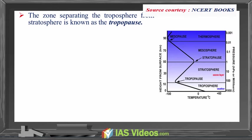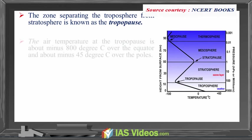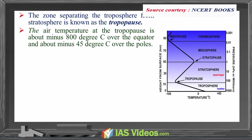The zone separating the troposphere from the stratosphere is known as the tropopause. The air temperature at the tropopause is about minus 80°C over the equator and about minus 45°C over the poles. The temperature here is nearly constant, and hence it is called the tropopause.